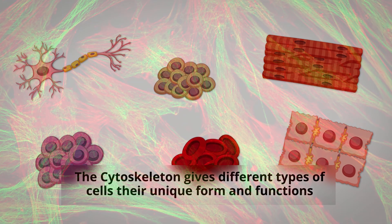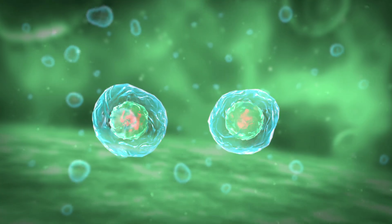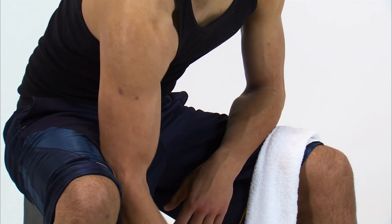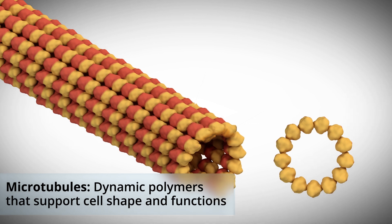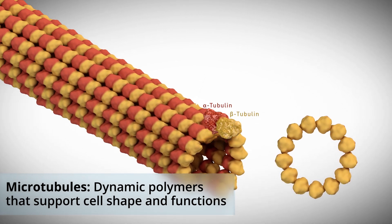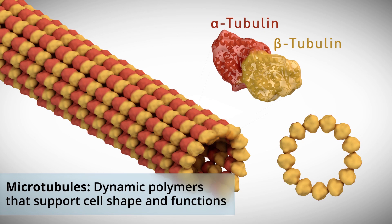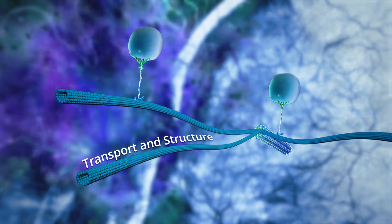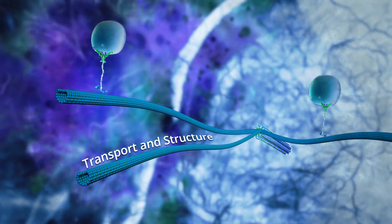The cytoskeleton can contract and change shapes, playing a key role in everything from cellular migration and division to muscle contraction. Microtubules are very important parts of the cytoskeleton. These highly dynamic polymers made of a protein called tubulin are very important for a number of cellular processes, such as vesicle trafficking and cell division.